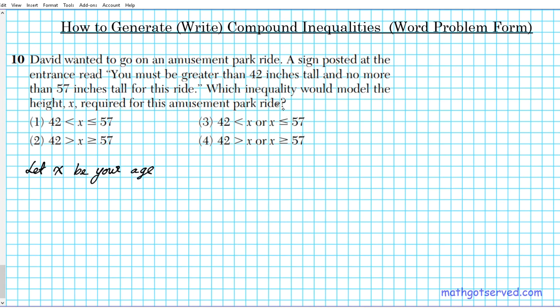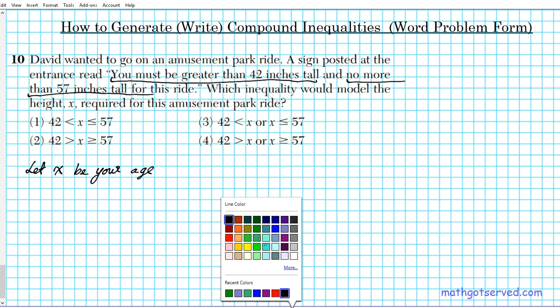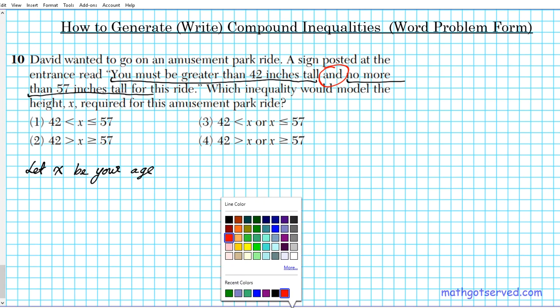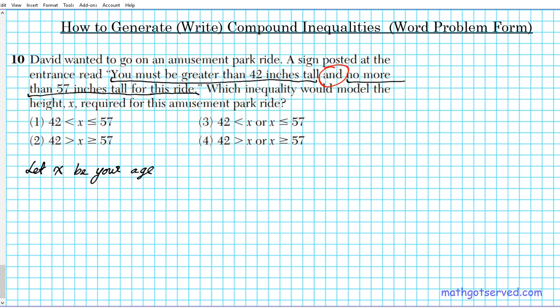What we have is we have two inequalities here that we're going to be combining. It says you must be greater than 42 inches as the first condition, and no more than 57 inches. You want to keep track of this word and, very important. It's like a combined inequality.